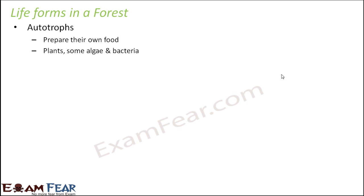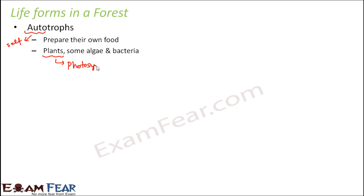There are two categories of organisms. Those who can prepare their own food are called autotrophs — 'auto' means self, so they are self-dependent for their food. Examples of autotrophs are plants. Plants prepare their food by the process of photosynthesis, so they do not depend on any other organism and can prepare their own food in the presence of sunlight.